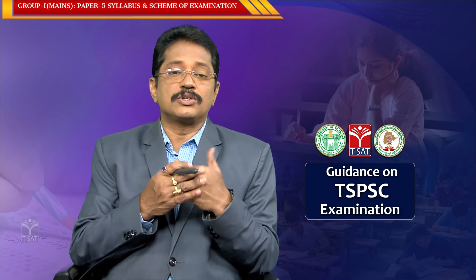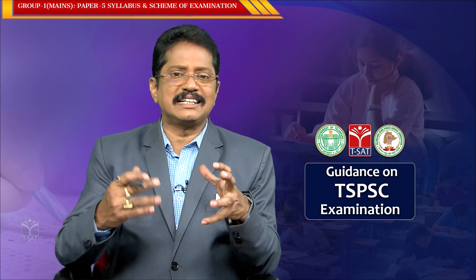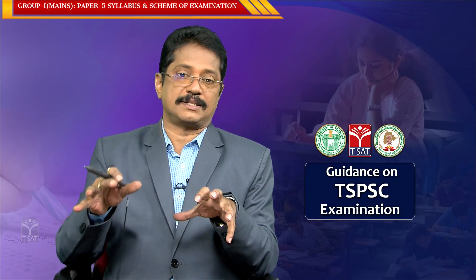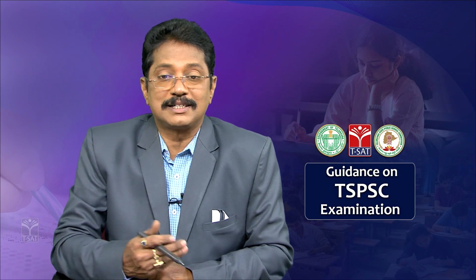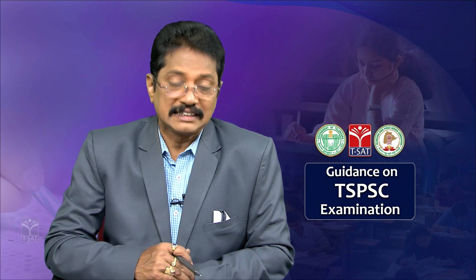Now we will do pie diagrams. A pie diagram is in circular form and the information is given in the form of sectors, where each sector represents one particular area. The following pie chart exhibits the distribution of overseas tourist traffic from India. Tourist traffic from India: to USA is 40%, UK is 10%, Japan is 30%, and other countries is 20%.